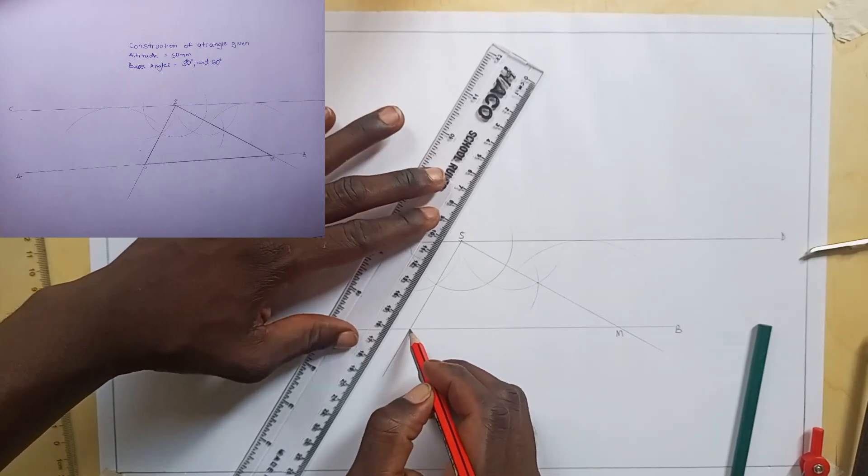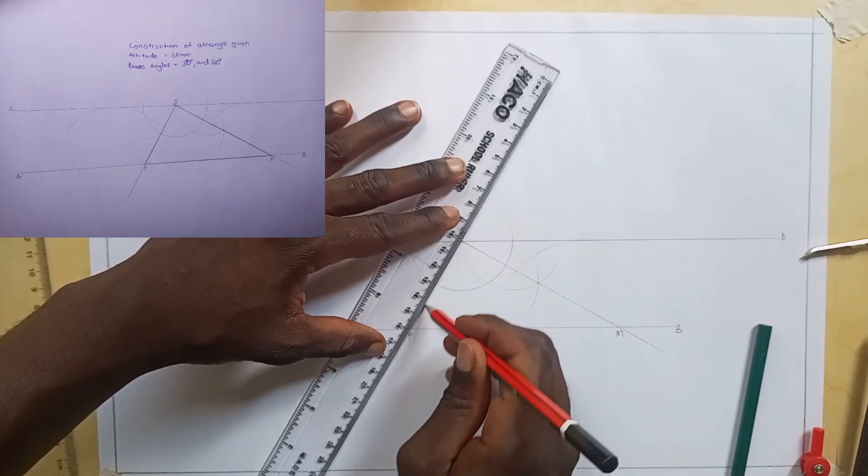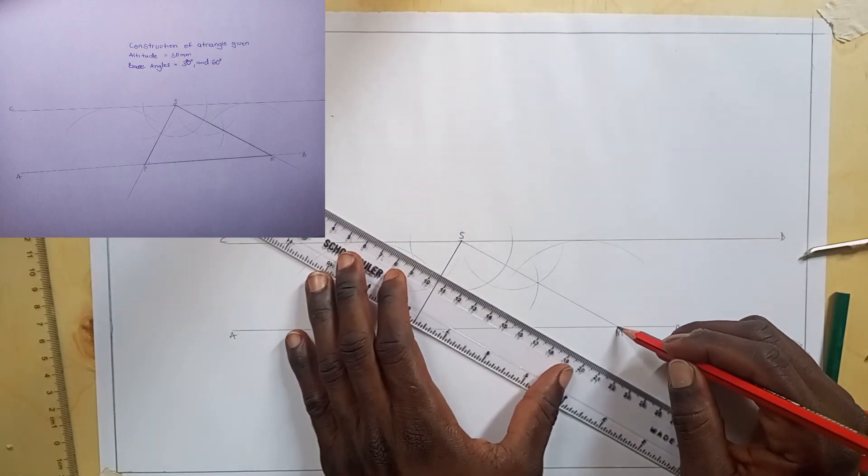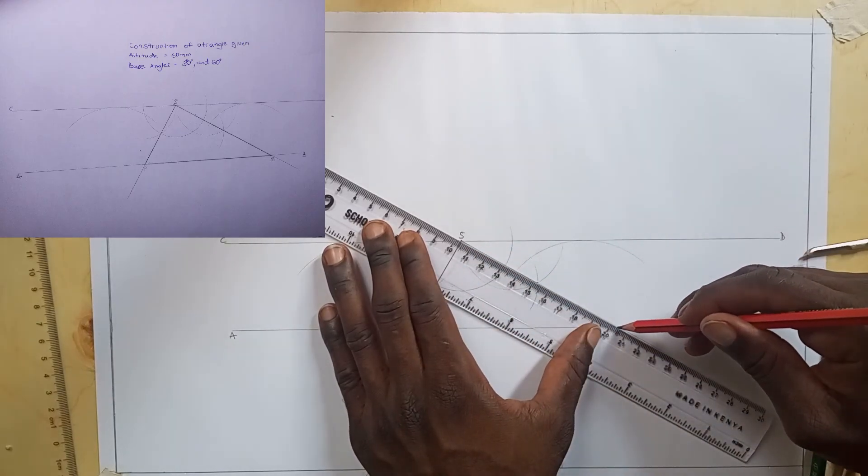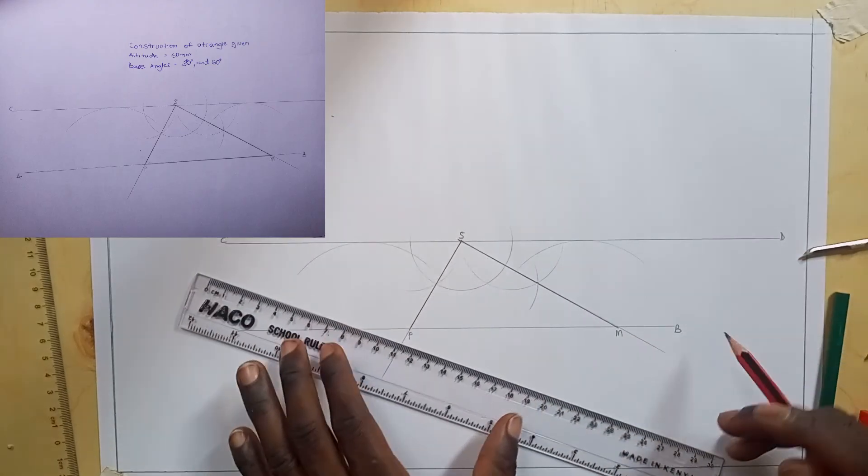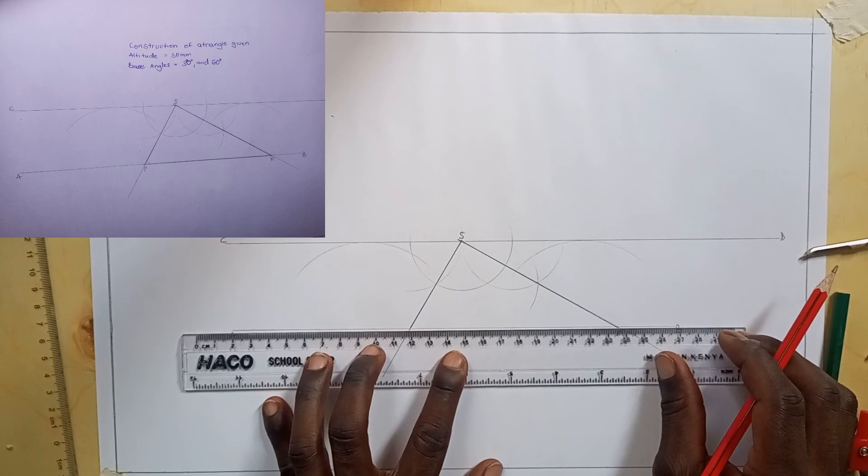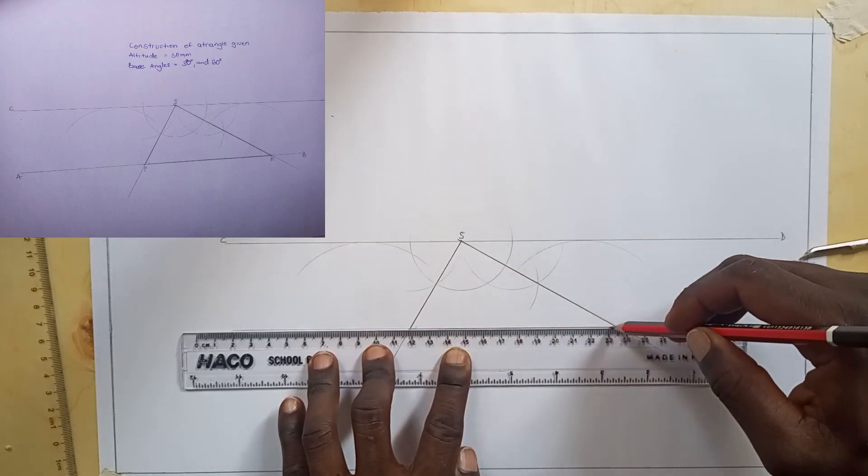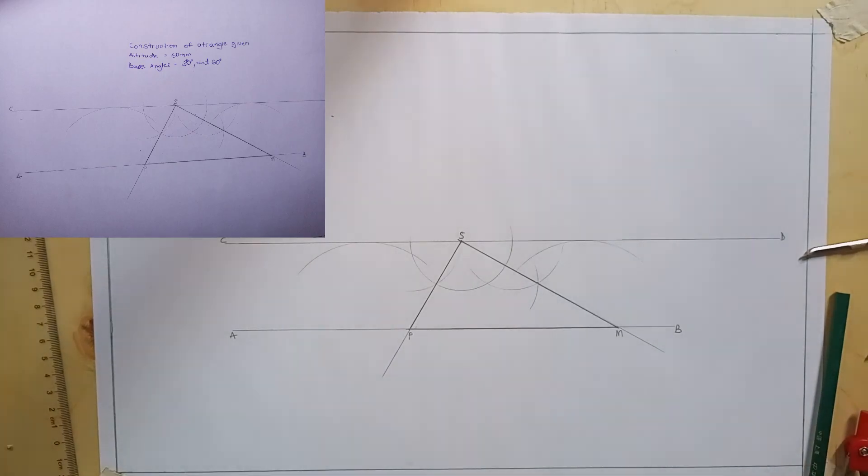You make it thicker by drawing outlines. This is our required triangle.